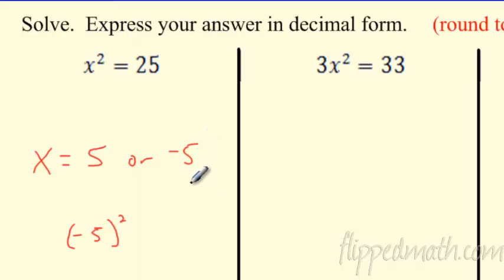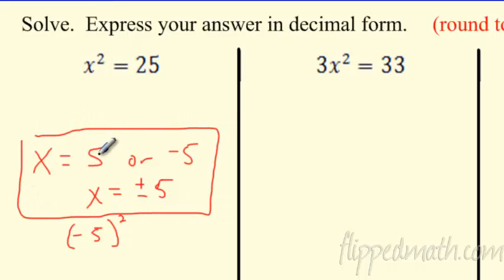So this actually has two answers, just like on the graph. Remember, we were graphing things, and we'd have those two answers. So it's 5 or negative 5. A little trick we're going to do is, we're going to start writing them like this. This is going to be X plus or minus 5. So they mean the same thing.